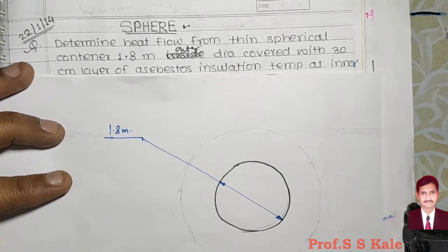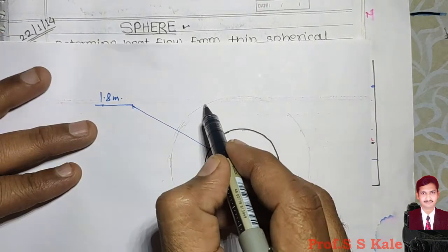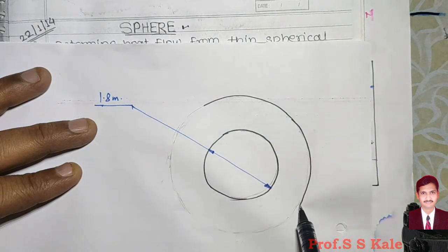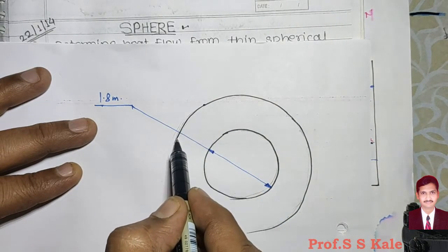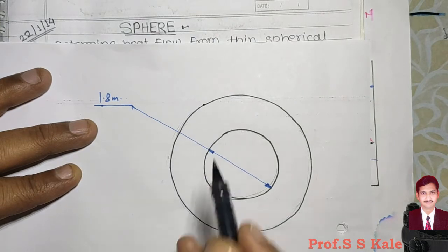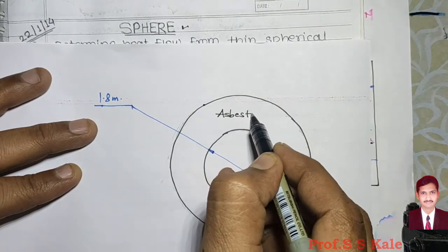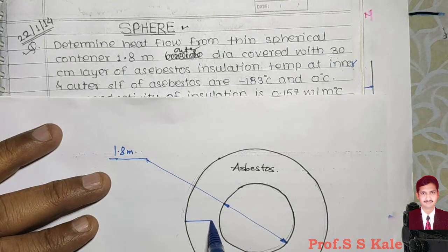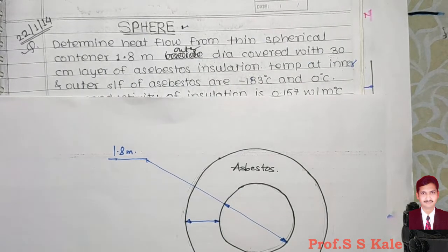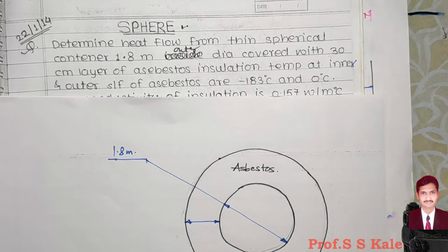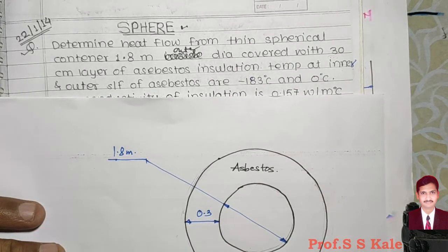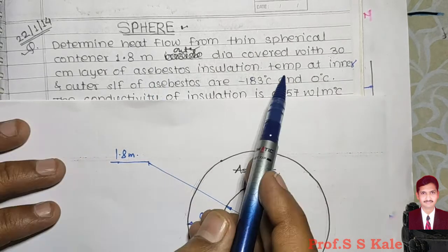I am drawing the asbestos layer like this. The thickness is given as 30 centimeters, which we convert to meters: 30 divided by 100 equals 0.3 meter. All dimensions we are taking in meters, so this thickness is 0.3 meter.